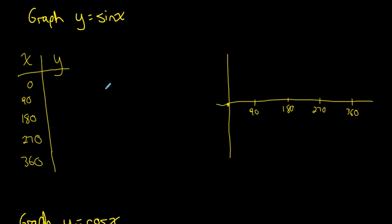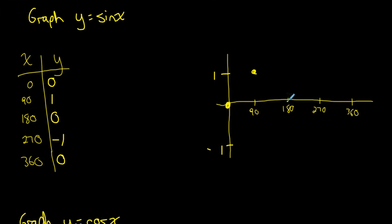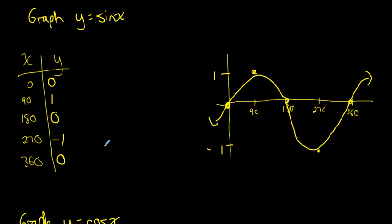Trig functions: let's look at what the graph of sine x looks like. It's a periodic function that completes one cycle every 360°. When x = 0°, sin = 0; at 90° it reaches 1; back to 0 at 180°; down to −1 at 270°; back to 0 at 360°. The graph goes up, down, and repeats every 360°.